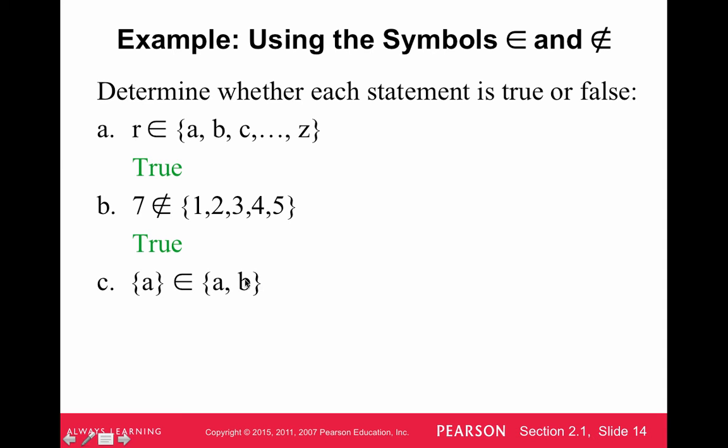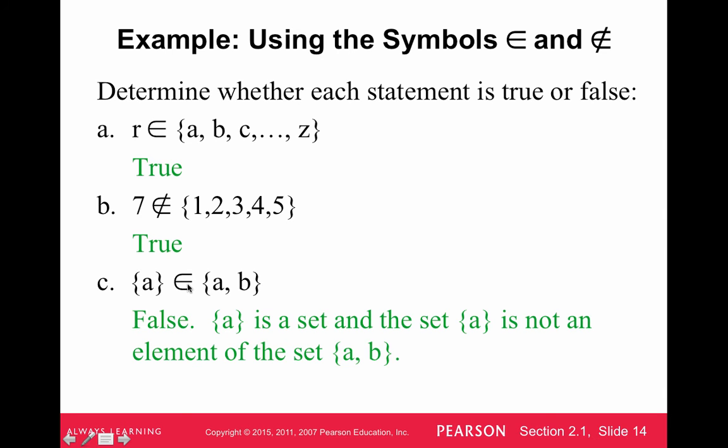And is A an element of the set A comma B? Definitely. Or wait a minute. No, this is, sorry. This is the set. Is the set an element of this set? And a set cannot be an element of the set? So that's false. Notice that this has brackets around it. So it's a set. So a set cannot be an element of another set.